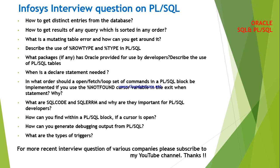What are SQLCODE and SQLERRM and why are they important for a PL/SQL developer? This is a very good question. When you perform SQL operations on a database, there may be a chance of getting errors, so you have to find what kind of error it is and where it went wrong. Oracle provides two predefined items: SQLCODE, which gives you the unique code for a particular error, and SQLERRM, which tells you what kind of error it is. For example, if it is a program error, it will show the error type followed by the SQL code, so you can easily identify and debug it.